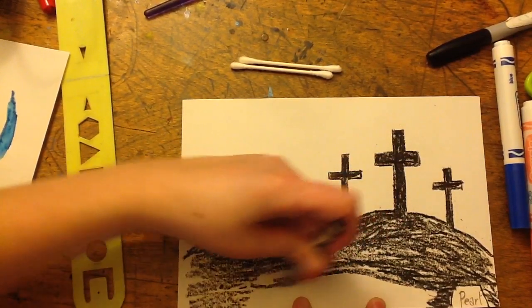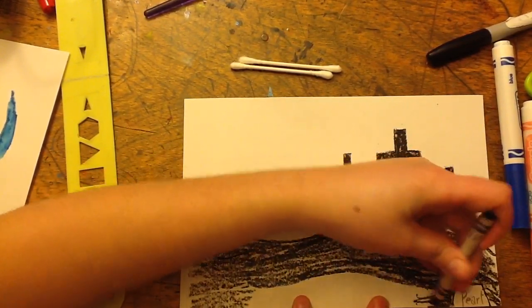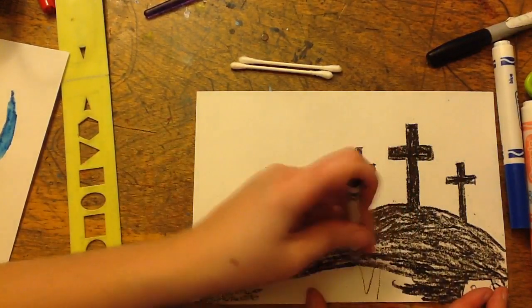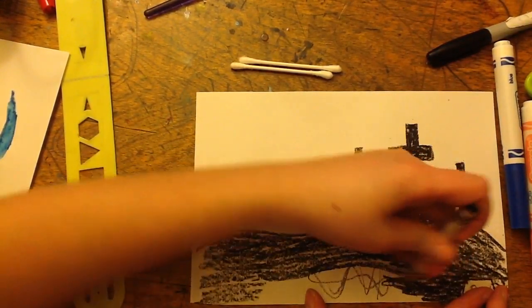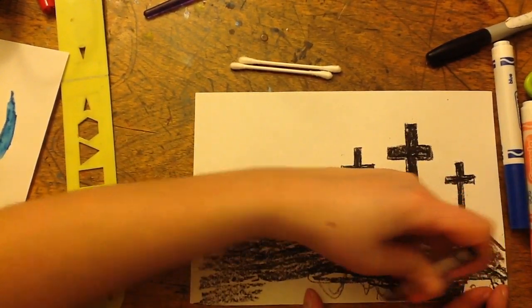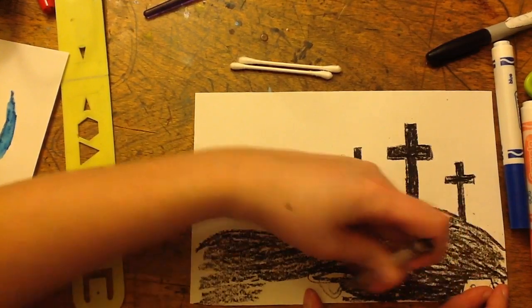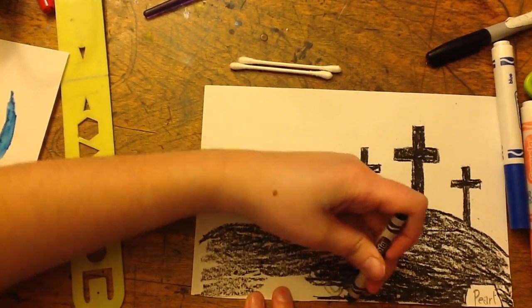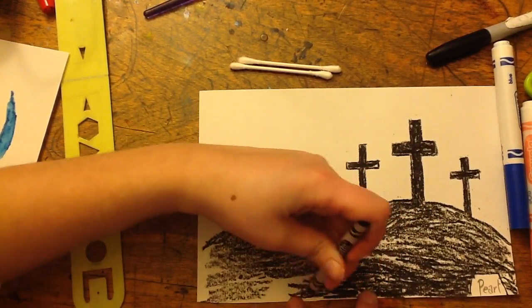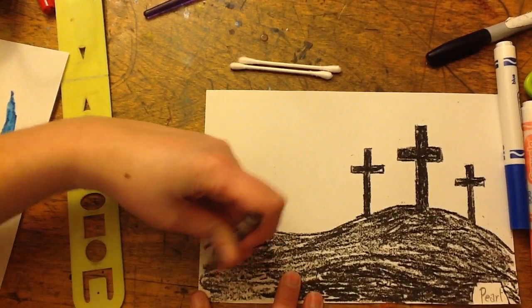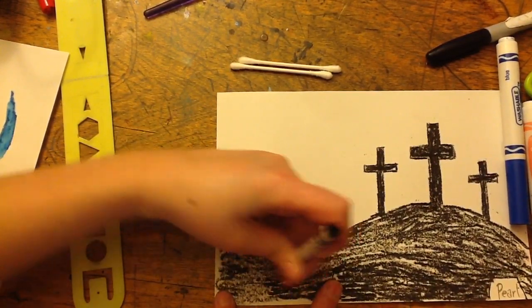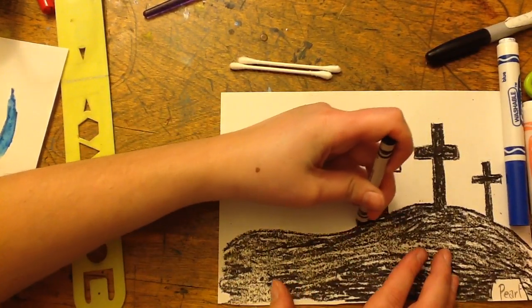You'll notice that as I color, I'm coloring all in the same direction. Anytime I'm coloring something a solid color, I like to color all in the same direction because if we color all over, it can start to look kind of scribbly. I feel like when we color in all directions we don't take our time as much to fill in all of those white spaces. I'm going over any little spots of white that I've missed, then I'm going to press really hard to make a nice line where my hillside is.